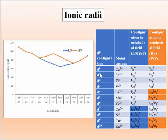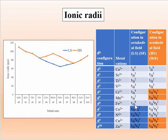From Ca²⁺ to Fe²⁺, the electrons are filling in the T₂g set, which is directed between the axes — not directly toward the ligands. Therefore, repulsion with the ligands is less, and the radii will decrease. Then the radii increase up to Zn²⁺ because electrons start filling the Eg set.